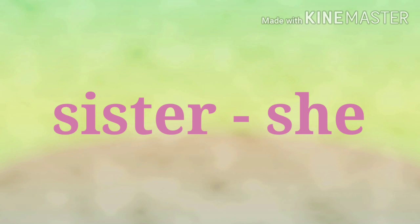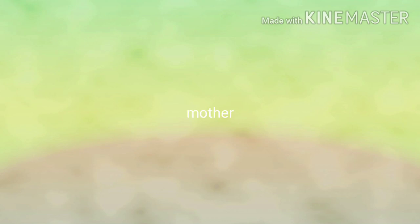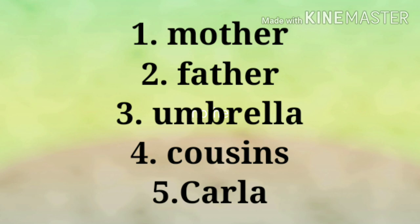Now I want you to get your paper and pen and write the correct personal pronoun — she, he, it, they — for each item. Number one is 'mother.' Number two, 'father.' Number three, 'umbrella.' Number four, 'cousins.' Number five, 'Carla.' Let us now check your answers.